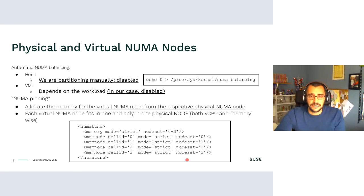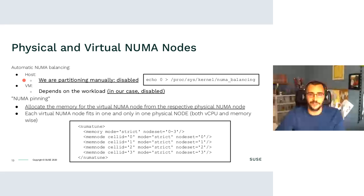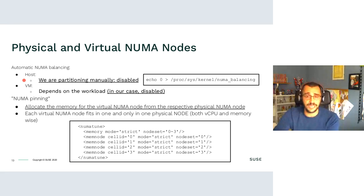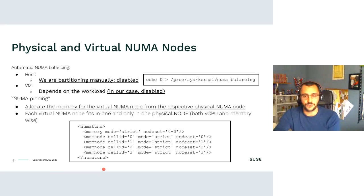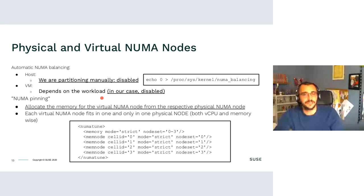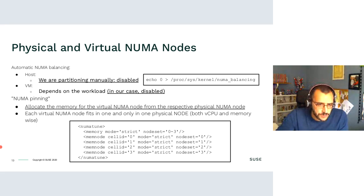For memory from a NUMA point of view, you want the memory for each virtual NUMA node to be allocated on the corresponding physical node. We disable automatic NUMA balancing at the host level because we are statically partitioning everything. Inside the VM, you can enable it if your workload benefits — for our workload it is disabled per the workload's recommendation.